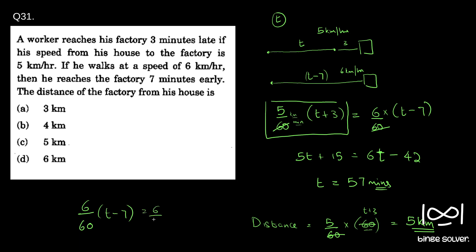Which would be 6 by 60 into t minus 7, and 57 minus 7 is 50. So this becomes 50 divided by 60, which becomes 5 by 6, which gives 5.